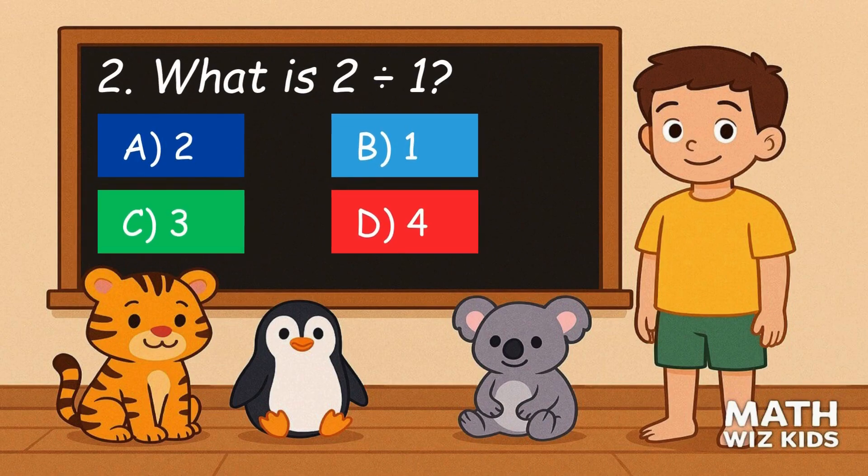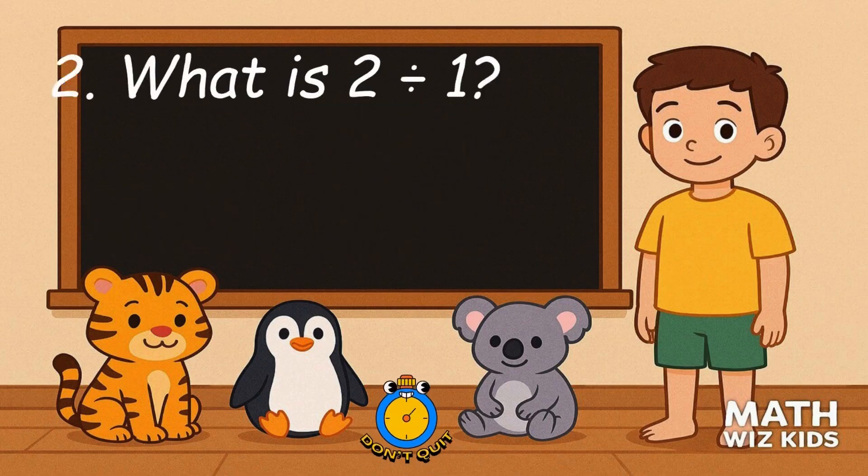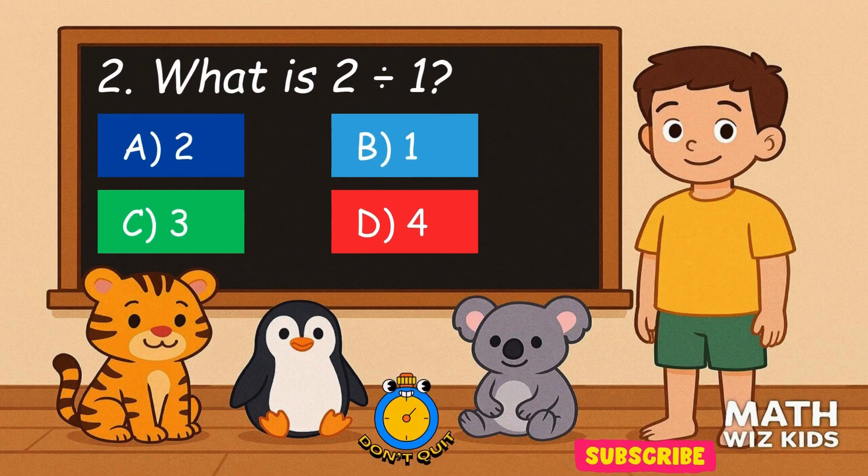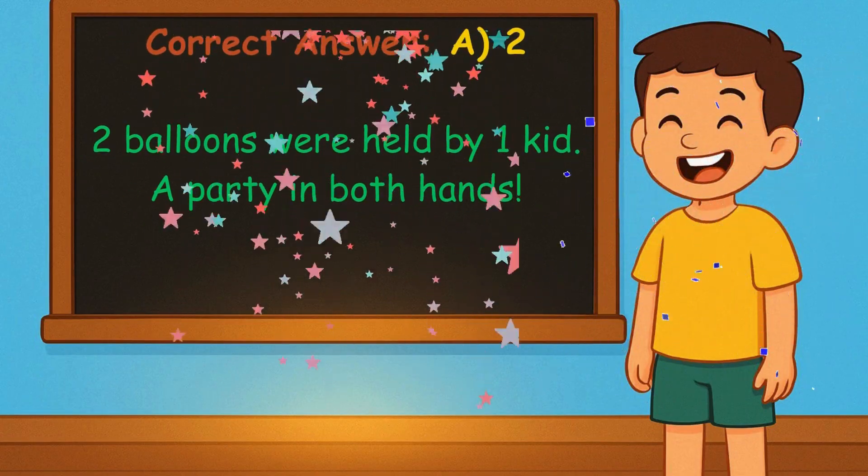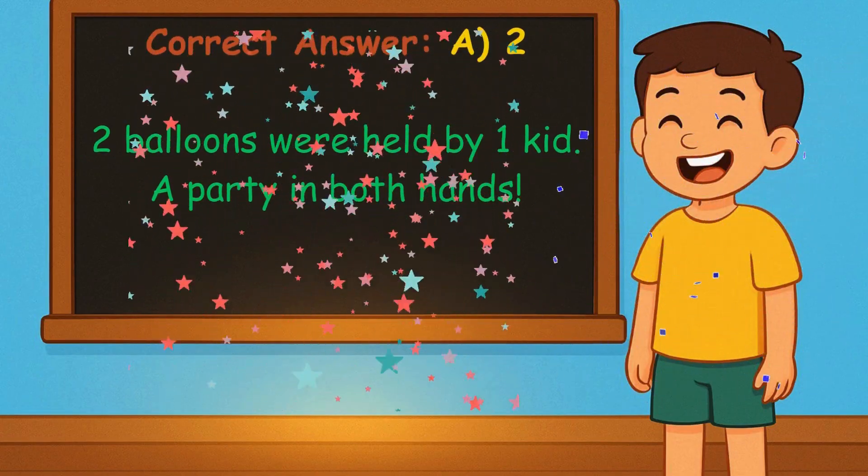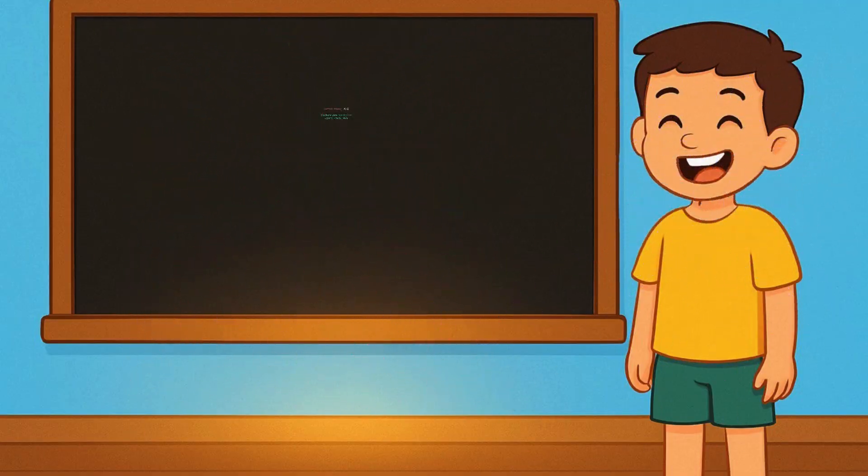2. What is 2 divided by 1? Is it A, 2, B, 1, C, 3, or D, 4? Correct answer is 2. One kid with 2 balloons? A party in both hands.